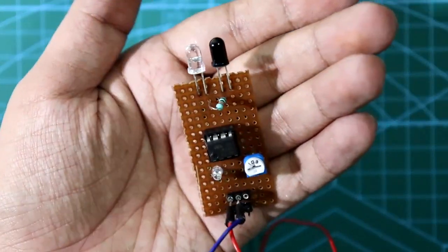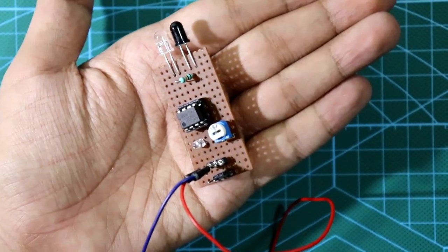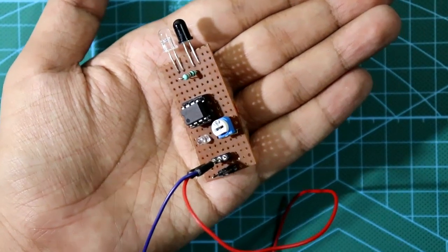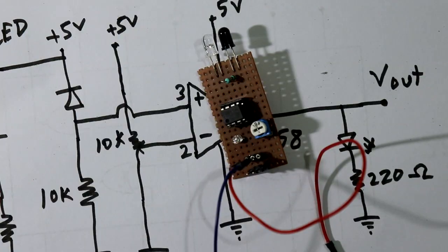So this is how we can make proximity sensor by ourselves. Here I have defined first pin as plus VCC, the middle one is ground, and third one is Vout. We will see the Vout pin at the time when we will do Arduino projects.